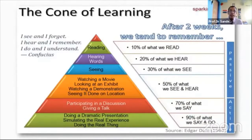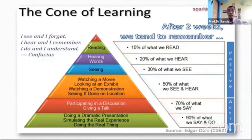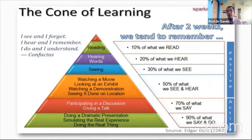There is a famous quote: 'I see and I forget, I hear and I remember, I do and I understand.' The cone of learning shows that after two weeks we remember only 10% of what we read, 20% of what we hear, 30% of what we see, 50% of what we see and hear — like watching a movie — 70% of what we say by participating in discussion, and 90% of what we see, say, and do through real experience. When students do real things, they remember 90% — that is the importance of the psychomotor domain.